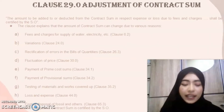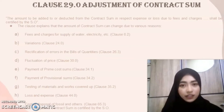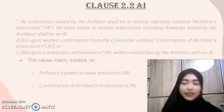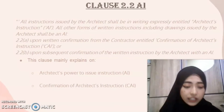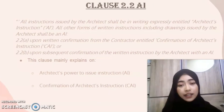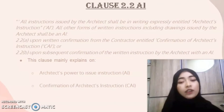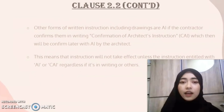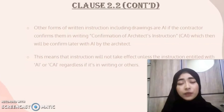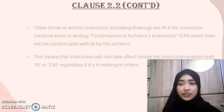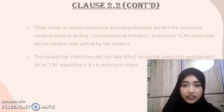It means that the SO is the only one who has the power to certify an adjusted contract sum. Next is Clause 2.2 - Architect's Instruction. This clause explains that all Architect's Instructions must be in writing and titled 'Architect Instruction.' It mainly explains the architect's power to issue the instruction (AI) and the confirmation of Architect's Instruction (CAI). Other forms of written instruction including drawings are AI if the contractor confirms them in writing as CAI, which will then be confirmed later with AI by the architect.